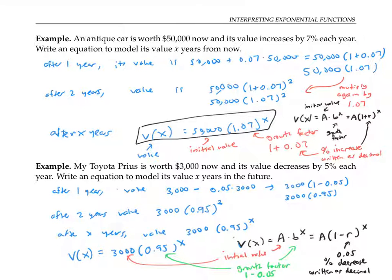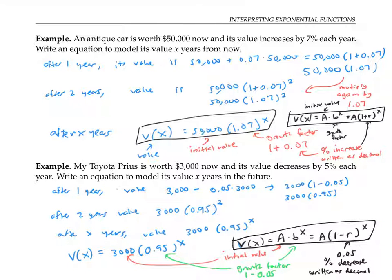Please take a moment to study these equations. When you have an exponential function, the leading number is the initial value. If written in the form a times b to the x, b is the growth factor. You can think of b as either (1 − r), where r is the percent decrease, or (1 + r), where r is the percent increase.